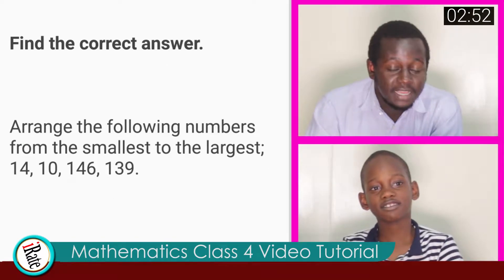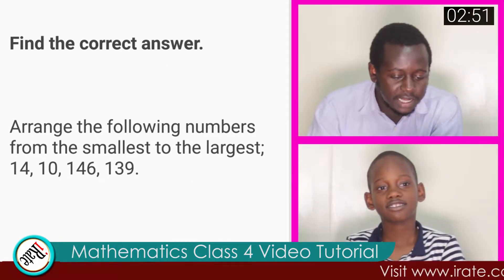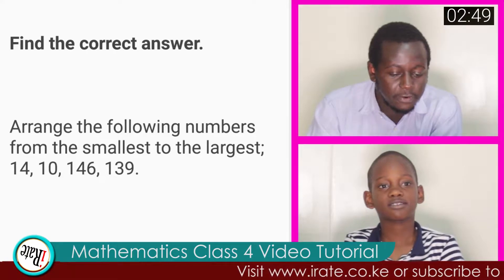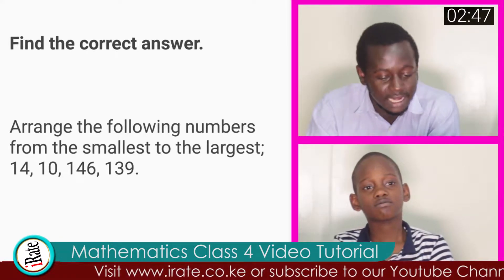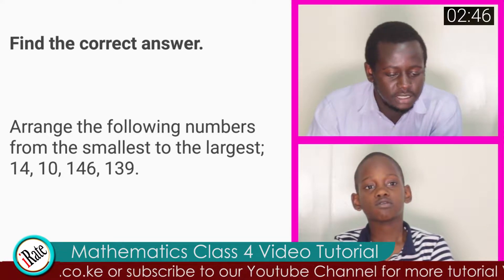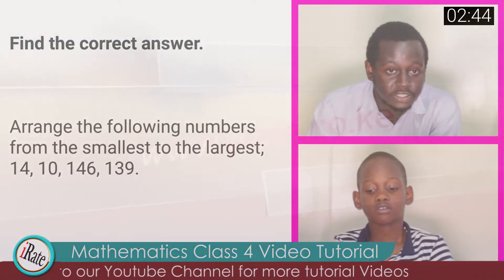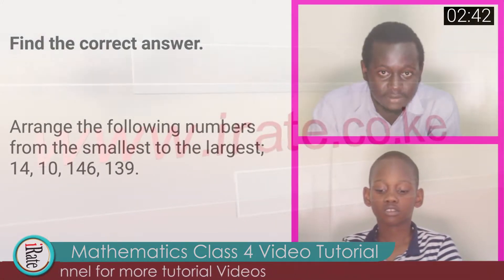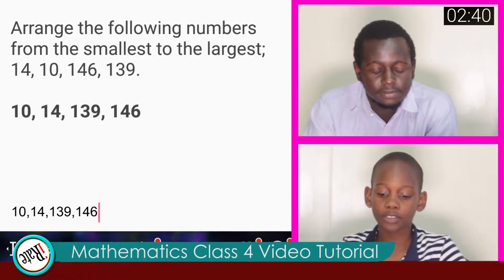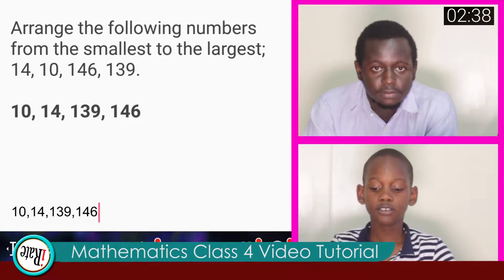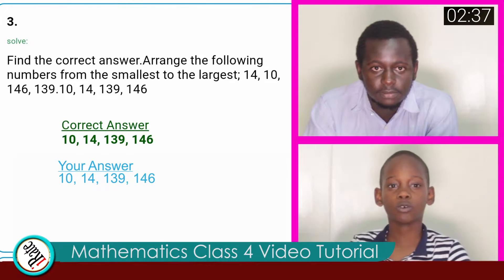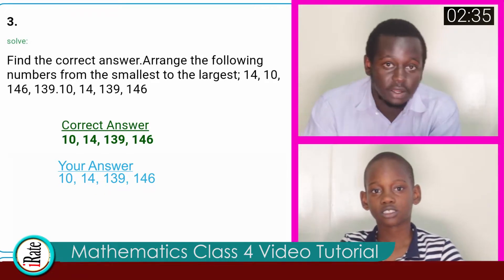Question number three. Find the correct answer. Arrange the following numbers from the smallest to the largest. Fourteen, ten, one forty-six, one thirty-nine. The answer to question number three is ten, fourteen, one thirty-nine, one forty-six. You are correct.